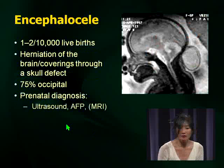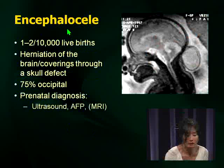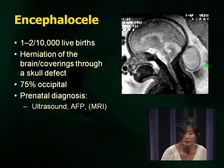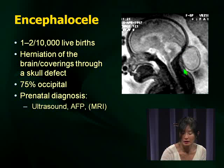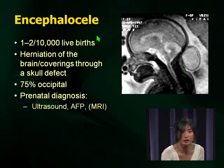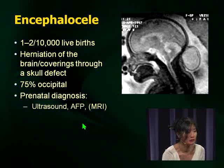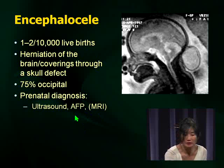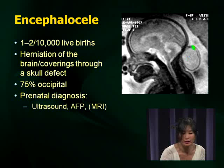Encephalocele is rarer — 0.1 per 1,000 live births. On an MRI, a fetal MRI, you see an outpouching — this is an extreme example — out the occiput. Most encephaloceles you will see or hear about are going to be occipital. Again, the prenatal diagnosis is through AFP. Remember that AFP is what you need to use for prenatal diagnosis. It is a herniation through a skull defect, whereas spina bifida is down the spine.